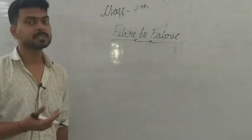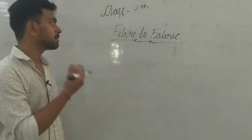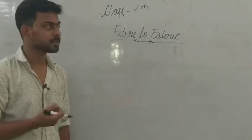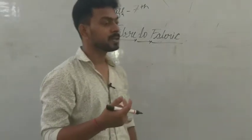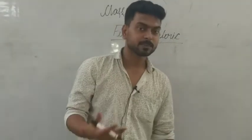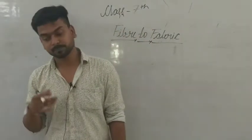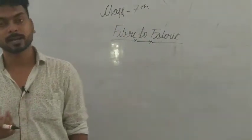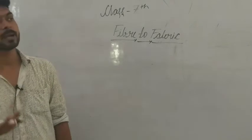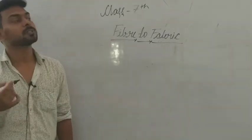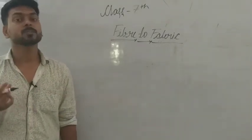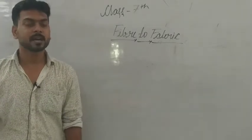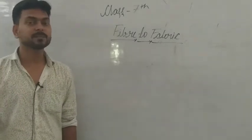First of all, we are going to discuss the chapter Fiber to Fabric. In Class 6, you have studied about plant fiber — how fiber is created from cotton plants, which is a cotton fiber. Besides that, you have studied about jute, flax, and different types of plant fibers.